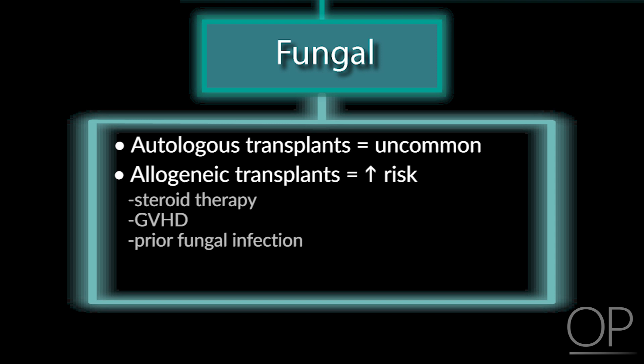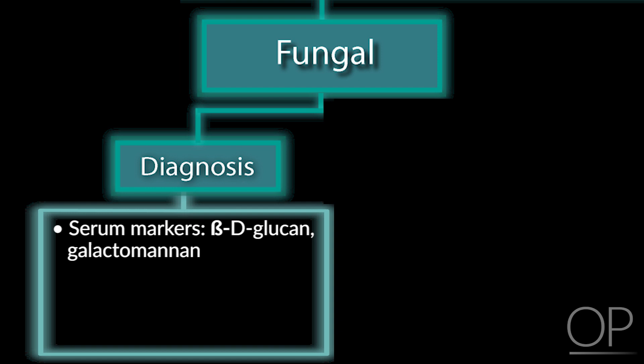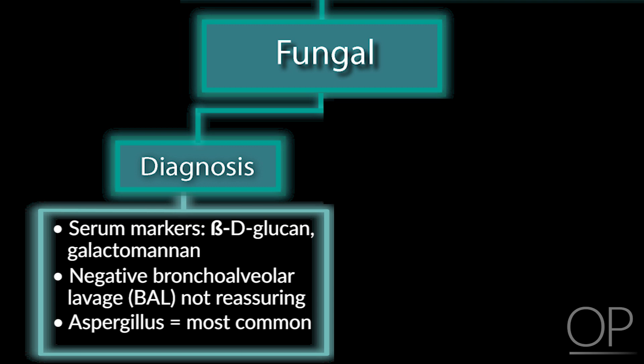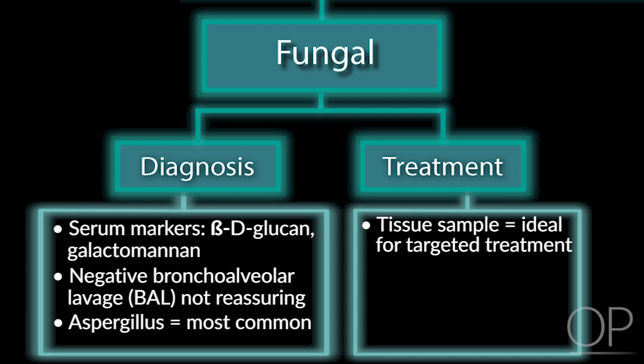Fungal infections are difficult to diagnose. There are now serum markers such as beta-D-glucan and galactomannan, but neither is perfect in sensitivity or specificity. BALs are very unhelpful in diagnosing pulmonary fungal infections because the infections are usually more peripheral, and a negative BAL should not be reassuring. Currently, aspergillus is the most common fungal infection we see, but mold infections are increasing with variable sensitivities, which is why tissue is needed. To adequately treat a fungal infection, you need tissue to know sensitivities and the specific subtype. Also, except for candida, curative therapy for molds and aspergillus almost always requires excision of the primary lesion and central line removal.